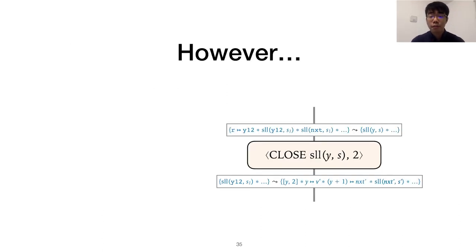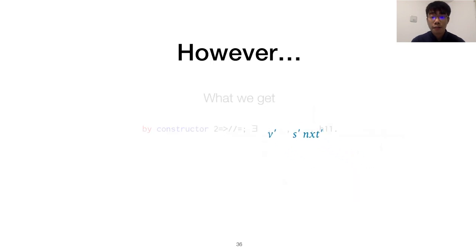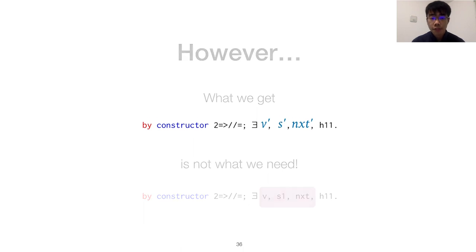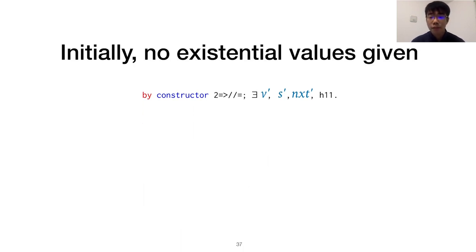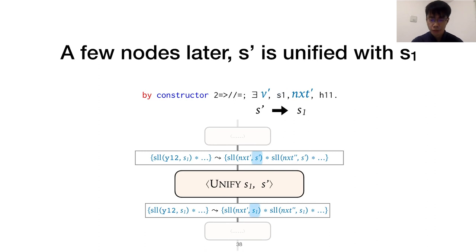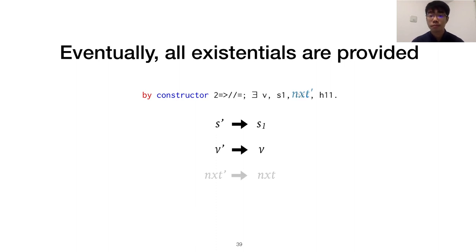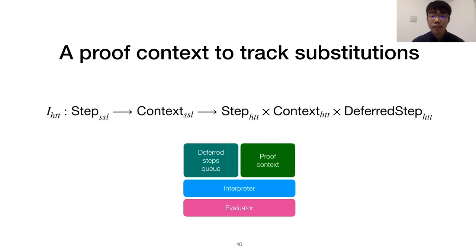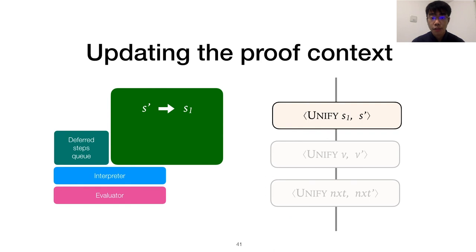But if you look at the deferred step that gets computed from the close rule, you'll notice that the existential variables of the unfolded predicate constructor don't quite match up with what's actually needed in the HTT proof. This is because when this step was first enqueued, Syslic referred to the existentials by their default names. But a few notes later, S prime is unified with another variable, S1, by this unify rule. Similarly, the other existentials also get their correct values later on. To keep track of these substitutions, we introduce an accumulator style proof context, which each invocation of the interpreter can update. For our example, let's add the first substitution to the proof context at the unify rule and do the same for the other two.